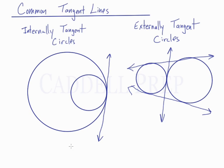So internally tangent circles have one common tangent line. Externally tangent circles have three common tangent lines.